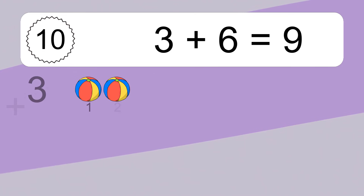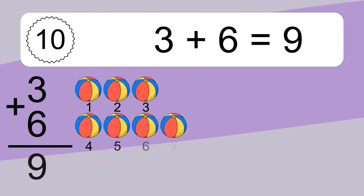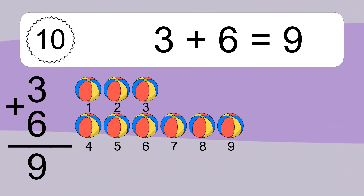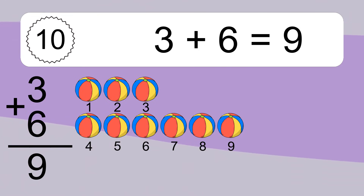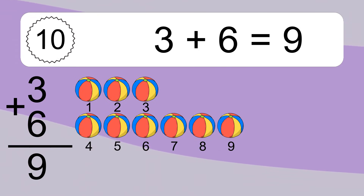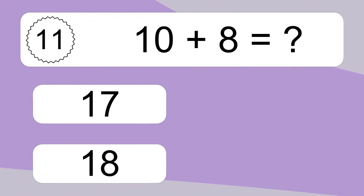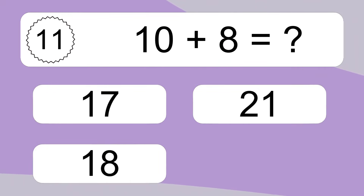Three plus six equals what? Three plus six equals nine. Let's count it: one, two, three, four, five, six, seven, eight, nine.